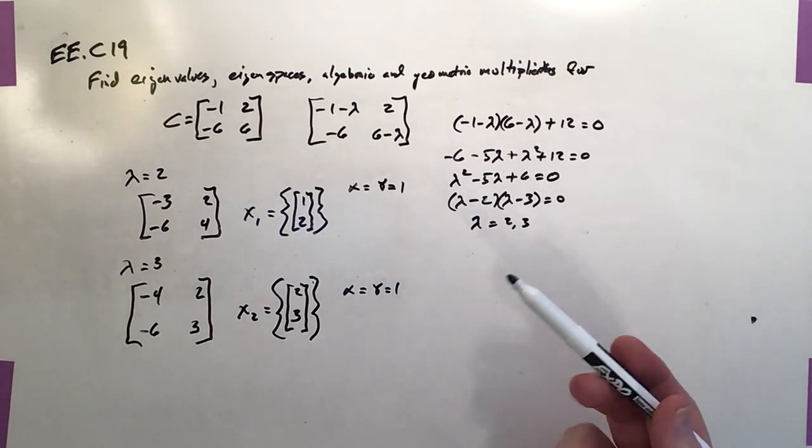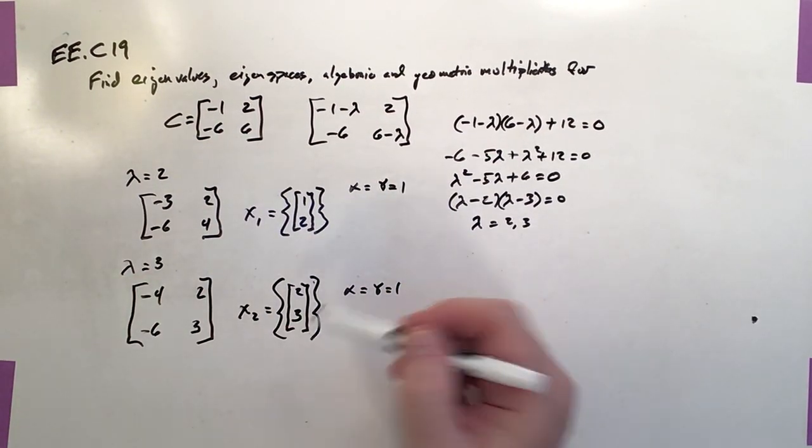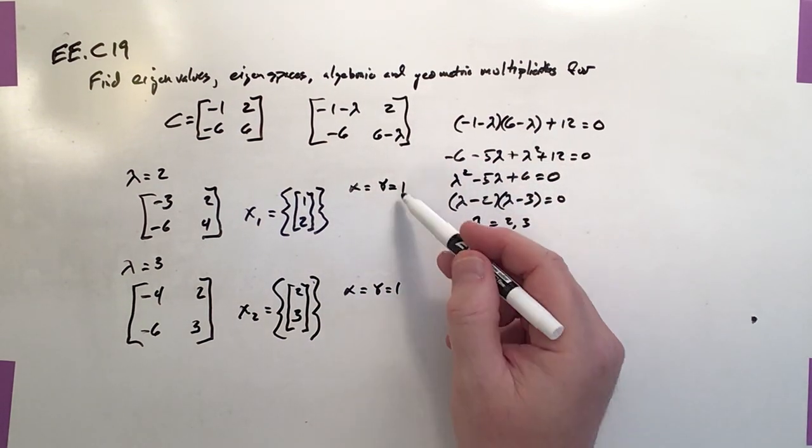Okay, so that's it. Those are the eigenvalues, the eigenspaces, the algebraic and geometric multiplicities.